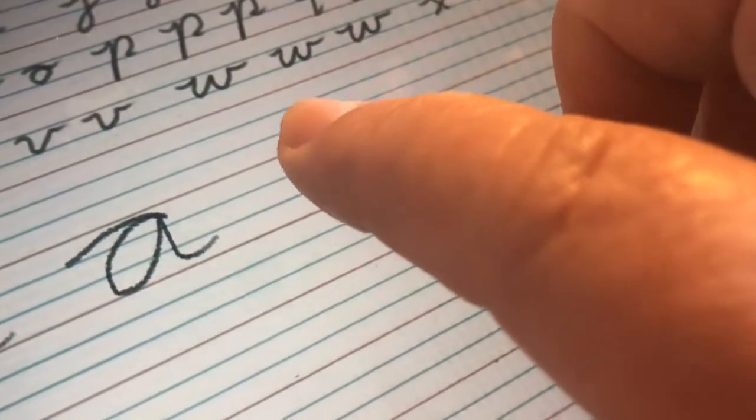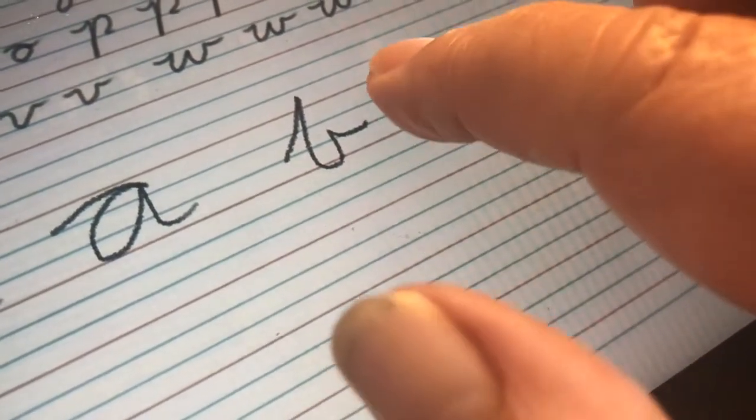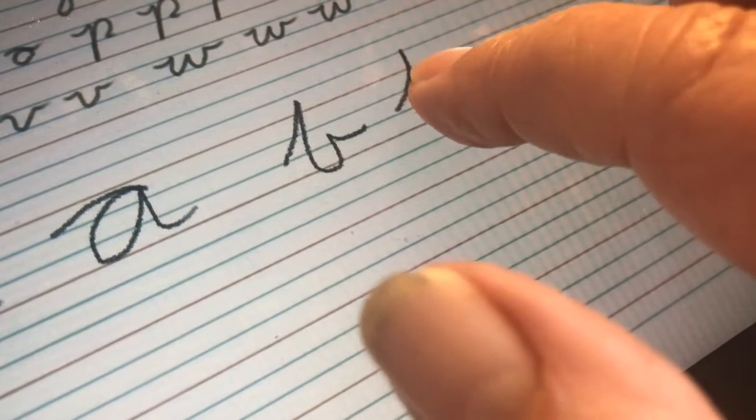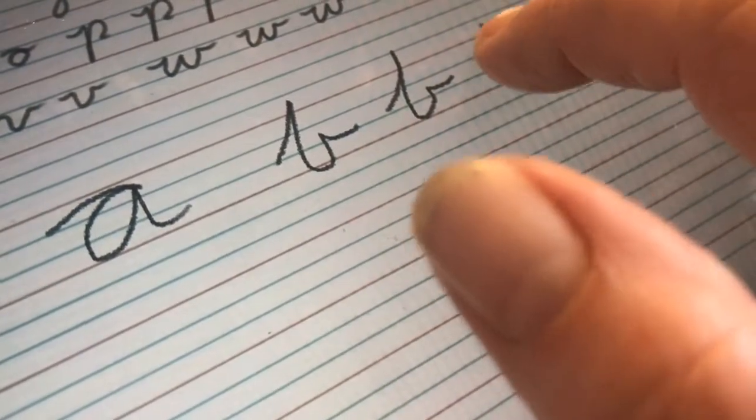Here's the B. Going up, around like that. I'll show you again. Go right up. It's a tall letter. And so that little bit there looks a little bit like that B, the lowercase b.